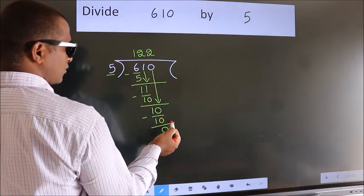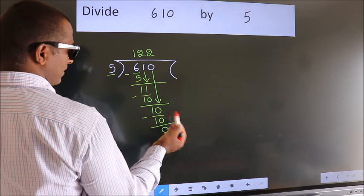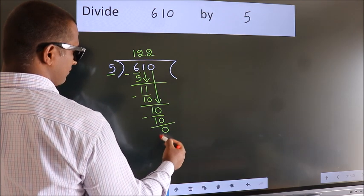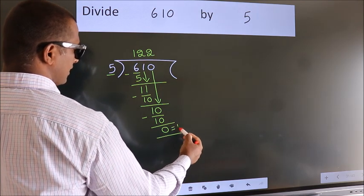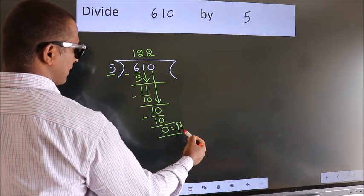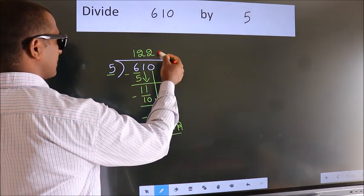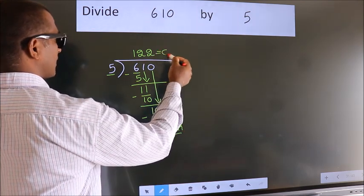No more numbers to bring down, so we stop here. This is our remainder. This is our quotient.